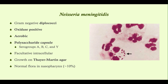Neisseria meningitidis is encapsulated — please remember that. That is different from Neisseria gonorrhea, which is not encapsulated. The cool thing about being encapsulated is that, even though it helps evade the immune system, we can create a vaccine for Neisseria meningitidis. We have a vaccine that we give for kids, particularly those going into college, to help protect against meningococcal meningitis. You might see these advertised on commercials in the U.S.